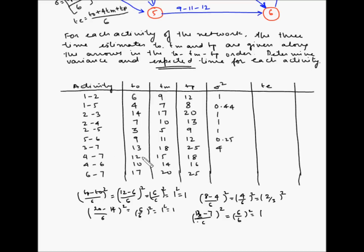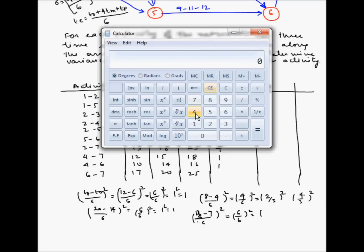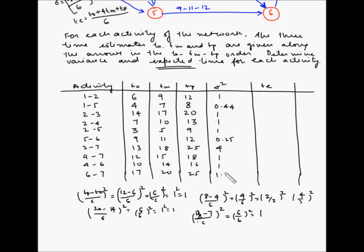For activity 4-7: (18 minus 12) divided by 6, squared. That is 6 divided by 6, which is 1, and 1 squared is 1. For activity 4-6: (16 minus 10) divided by 6, squared. That is 6 divided by 6, which is 1, and 1 squared is 1. For activity 6-7: (25 minus 17) divided by 6, squared. 25 minus 17 is 8, divided by 6 is 4/3, approximately 1.33. Squared, that gives 1.78. These are the variances for each of the activities.